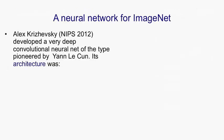Alex Krizhevsky's network is a very deep convolutional neural net of the type pioneered by LeCun, first used for digit recognition. Yann later applied it to recognising real objects, and this work uses all the lessons learned by Yann's group, Yoshua Bengio's group, and various other groups developing deep neural nets for real vision.